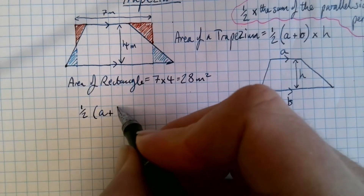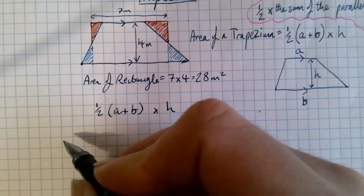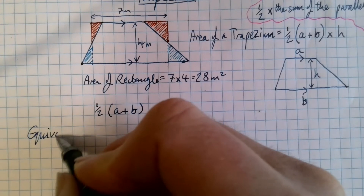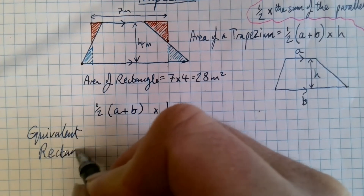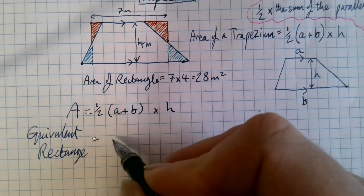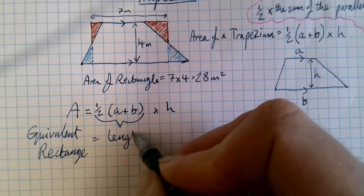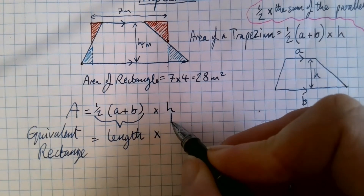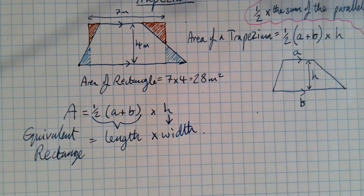So: a half (a + b) times h. The equivalent rectangle — the rectangle that would have the same area — has that as its length and that as its width. Right, now we're going to practice one of those, and then I'll give you a few to practice.